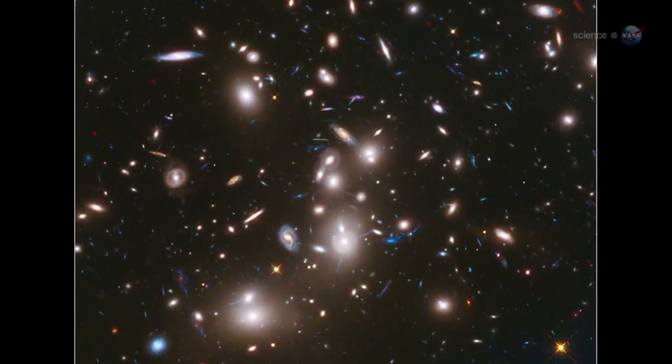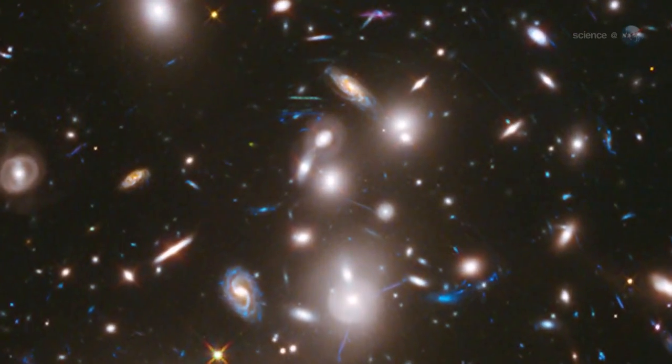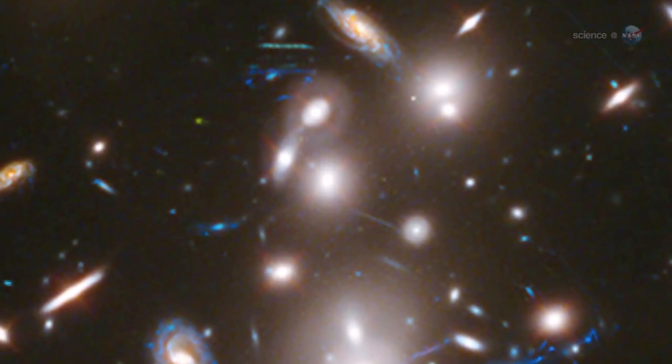Overall, the Hubble exposure of Abell 2744 revealed almost 3,000 distant galaxies, magnified as much as 10 to 20 times brighter than they would normally appear.